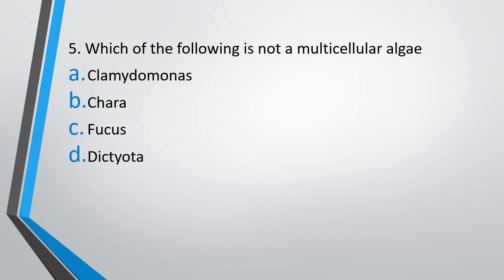Question 5: Which of the following is not a multicellular algae? One of these is a unicellular alga — identify which one. Option A: Chlamydomonas. Option B: Chara. Option C: Fucus. Option D: Dictyota. The correct answer is Option A, Chlamydomonas.